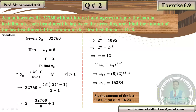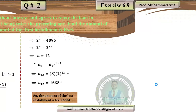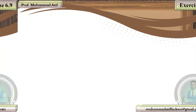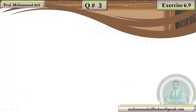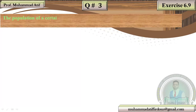Any problem? Next we move on to question number 3. The population of a certain village is 62,500. What will be its population after 3 years if it increases at the rate of 4% annually?